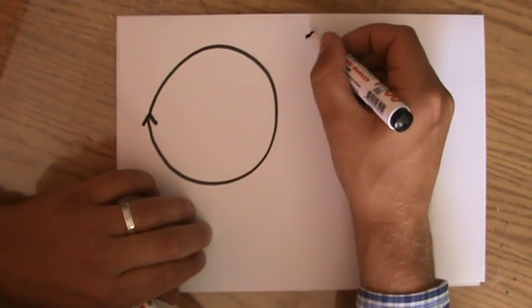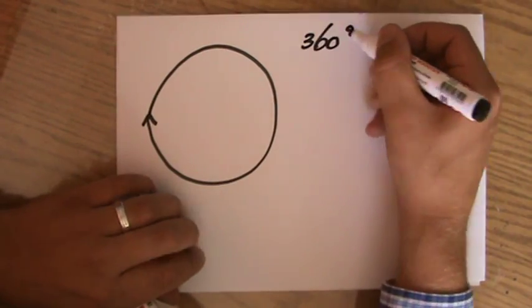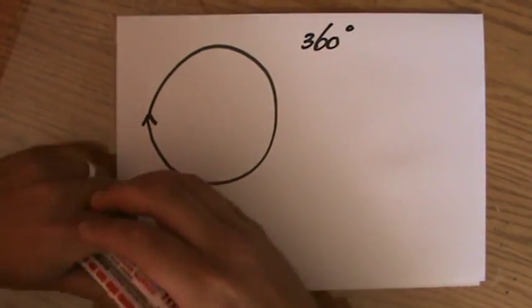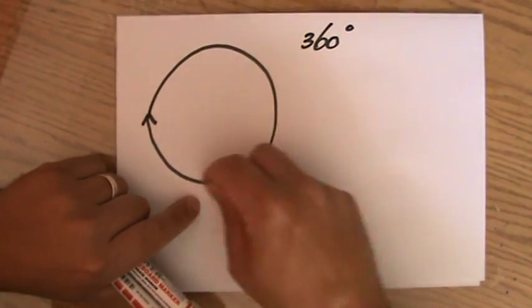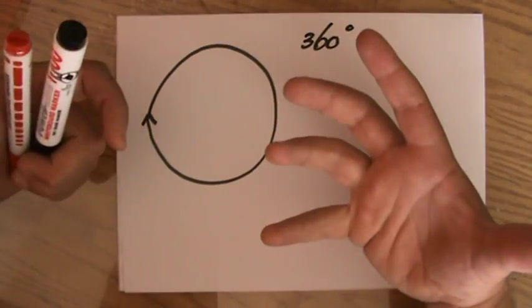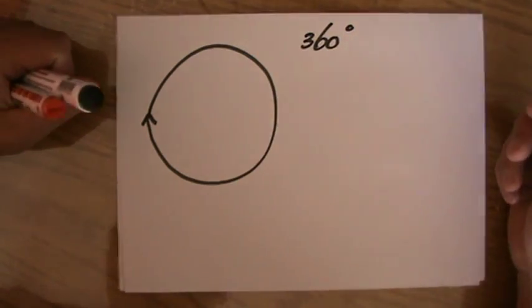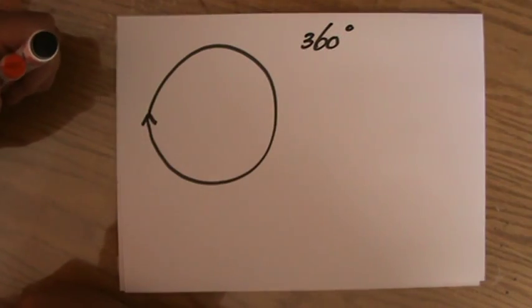And how many degrees in a full turn? I'm pretty sure most of you are going to say now, well that's 360 degrees. Yeah, that's good. But let's just take a moment now to discuss, why did we ever decide upon 360 degrees in a full turn? Why didn't we say 100 degrees, or 10? Why 360? It's a little bit of a weird number to choose, right?